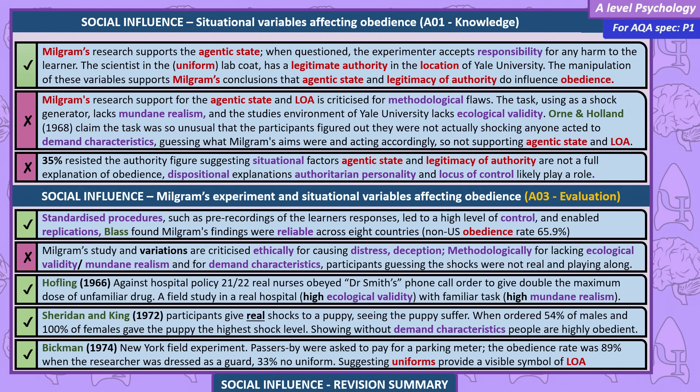Supporting studies. Hoffling, 1966: against hospital policy, 21 out of 22 real nurses obeyed Dr. Smith's phone call order to give double the maximum dose of an unfamiliar drug — a field study in a real hospital, giving high ecological validity and high mundane realism. Sheridan and King, 1972: participants gave real shocks to a puppy, seeing it suffer; when ordered, 54% of males and 100% of females gave the puppy the highest shock level, showing without demand characteristics people are highly obedient. Bickman, 1974: in a New York field experiment, passersby were asked to pay for a parking meter — obedience was 89% when the researcher was dressed as a guard versus 33% with no uniform, suggesting uniforms provide a visible symbol of legitimacy of authority.